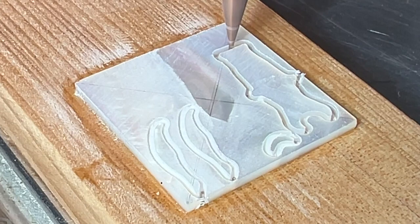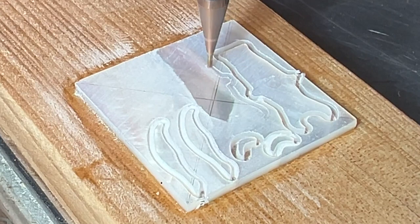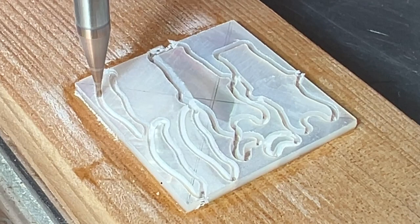Each pass removes only 0.1 millimeters of material, so the feeds and speeds are extremely conservative for this material and size of object.